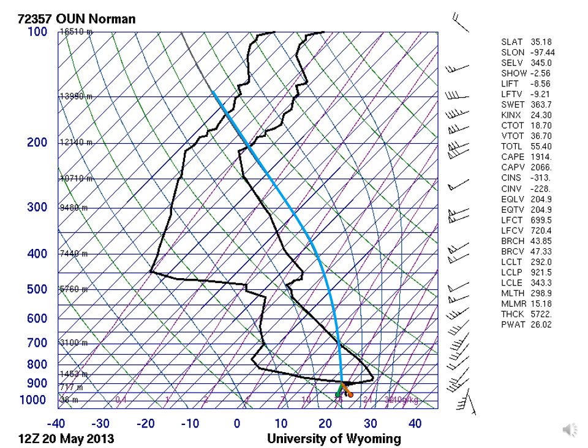Here we have a sounding from Norman, Oklahoma, from May of 2013 — a tornadic supercell day. We lifted our air parcel from the surface, had a relatively low lifting condensation level, and the blue line shows the moist adiabat the air parcel follows. Once you reach the level of free convection, all the way up to the equilibrium level, we integrate that area — that is the convective available potential energy. We've looked at this graphically, but now we're going to figure out how to do it mathematically.